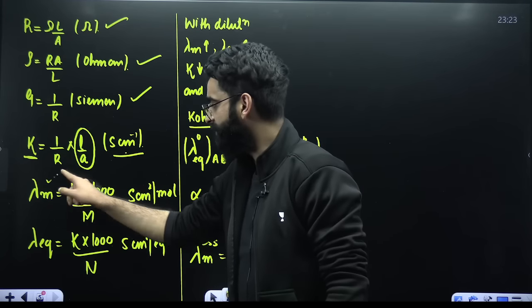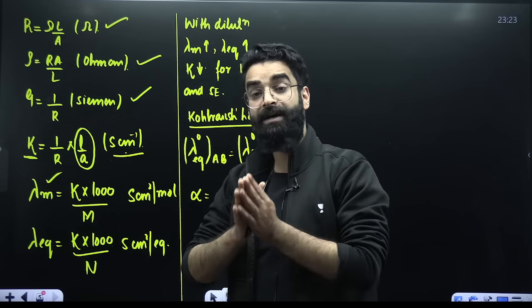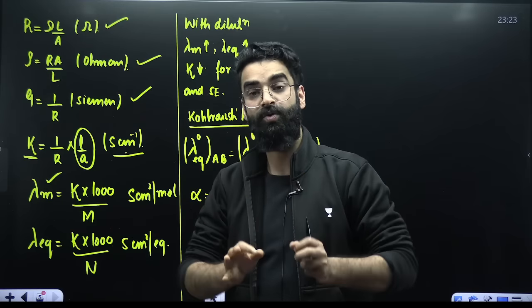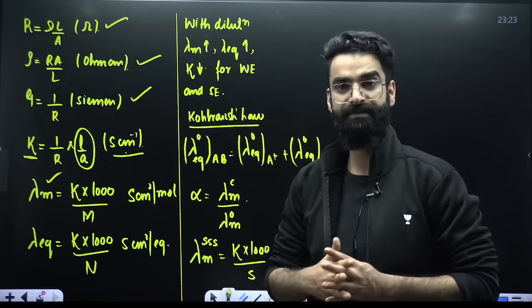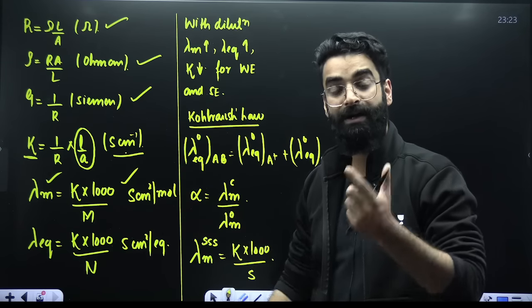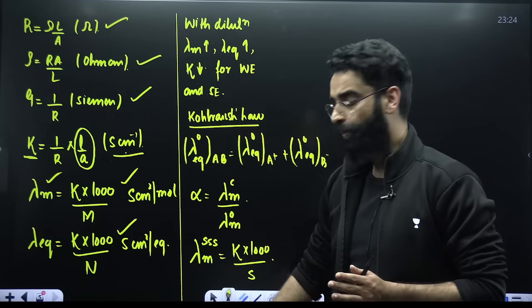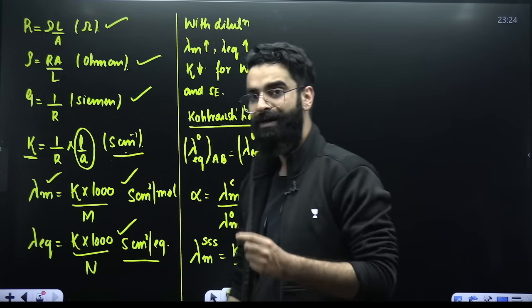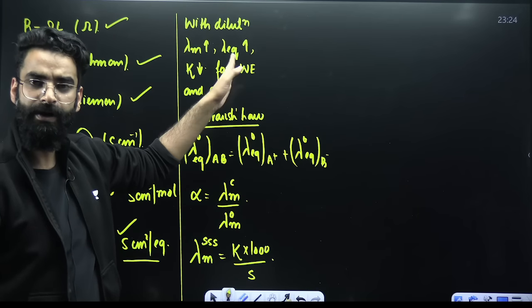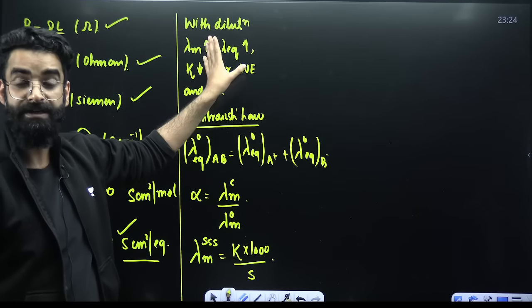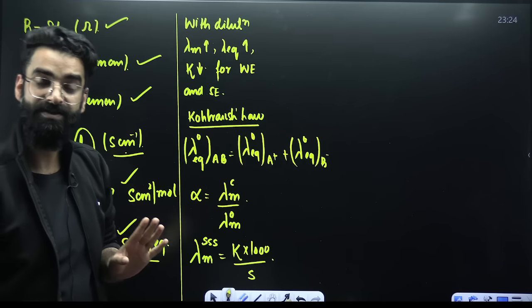Molar conductance is defined as the conductance shown by an electrolytic solution when one mole of electrolyte is present in a given volume of solution. Molar conductivity is calculated as κ × 1000 divided by molarity. Equivalent conductance is κ × 1000 divided by normality (in S·cm²/equivalent). With dilution, molar conductance and equivalent conductance increase, but conductivity decreases — this is valid for both weak and strong electrolytes.